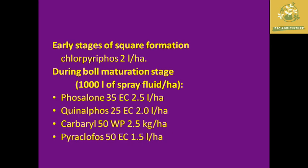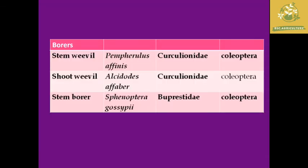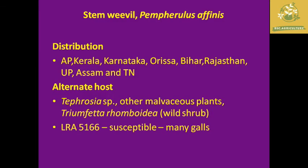A boll worm pesticide complex table is provided for reference and study. Next, we move to borers, which include the stem weevil, shoot weevil, and stem borers, along with their scientific names, families, and orders.